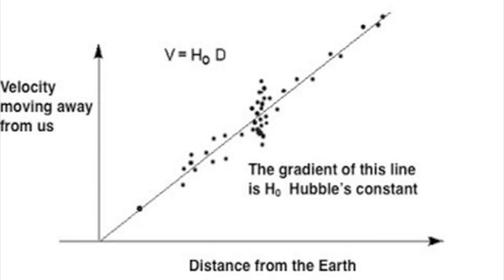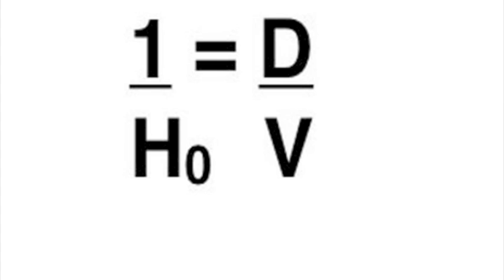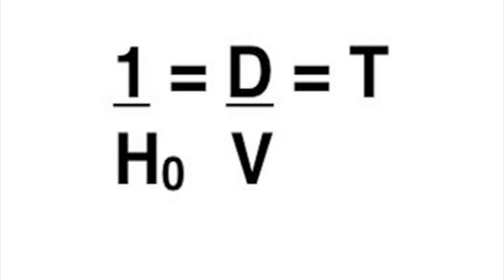Looking back again at the graph, the gradient which we call Hubble's constant is velocity over distance. If we simply take that and then invert it, we get 1 over Hubble's constant is distance over velocity. Then you know that distance divided by velocity equals time.